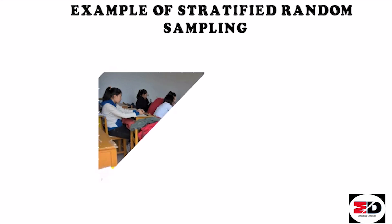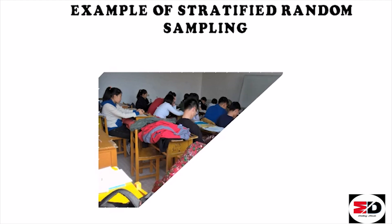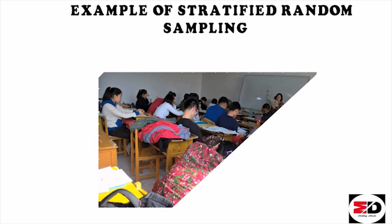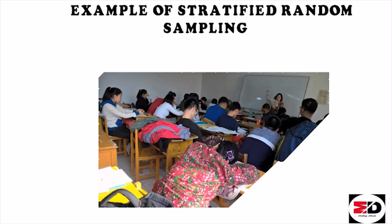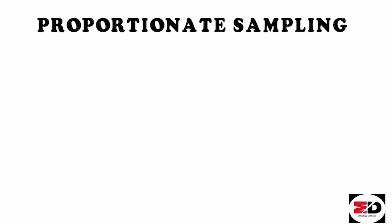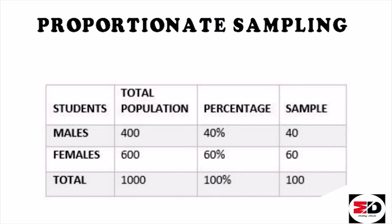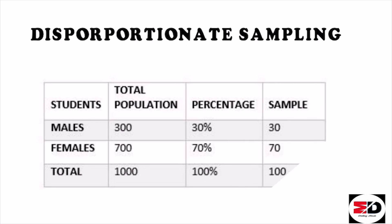For stratified sampling, we first need to create strata. Suppose you have a population of 1000 students and you want to study attentiveness in class between males and females, needing a sample of 100. You divide them into two groups — males and females — and find there are 600 females and 400 males, meaning 60% females and 40% males, a 3:2 ratio. If instead you take 70 females and 30 males based on that ratio, that is proportionate sampling. But if you take them based on your own preference, that is disproportionate sampling.